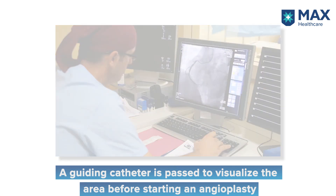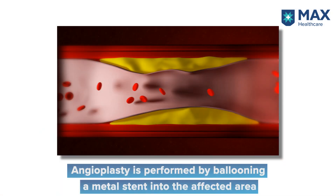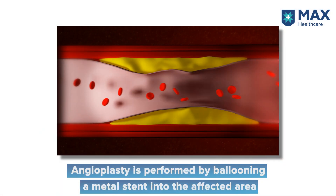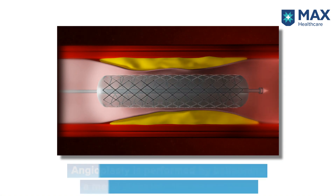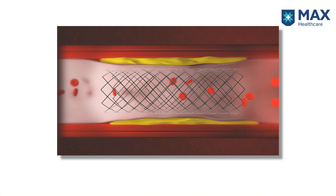First, we take the guiding catheter through the sheath, hook the artery, visualize where the blockage is, and then pass a wire through that blockage. Over that wire, we pass our balloon and dilate the lesion. Once the lesion is dilated, we place the stent and again dilate that particular stent. That is how the angioplasty is performed.